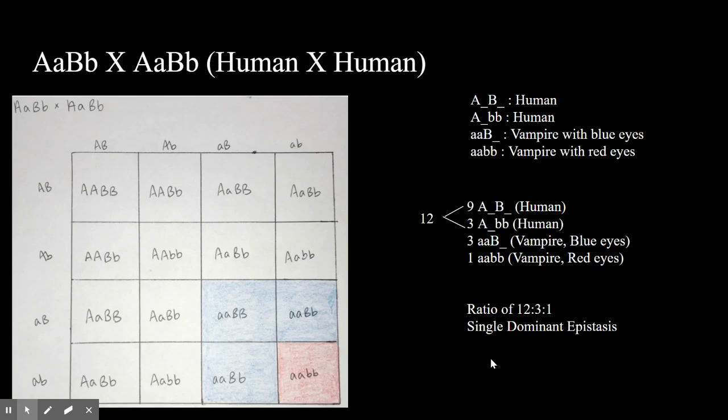This cross results in 12 individuals being normal or human, big A, big B, or big A to little b's, while three individuals are vampires with blue eyes and one individual is a vampire with red eyes. Therefore it is a single dominant epistasis cross.